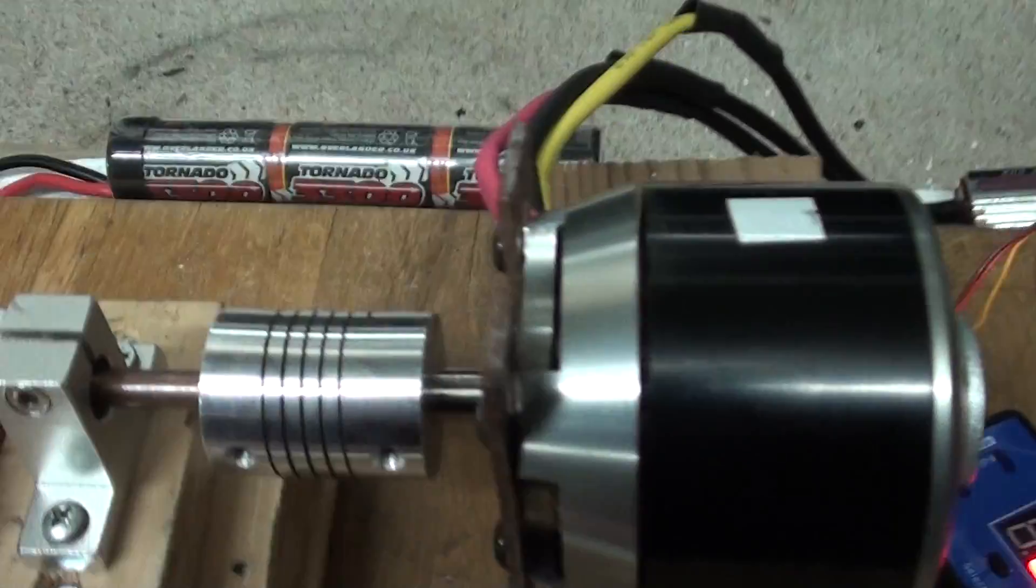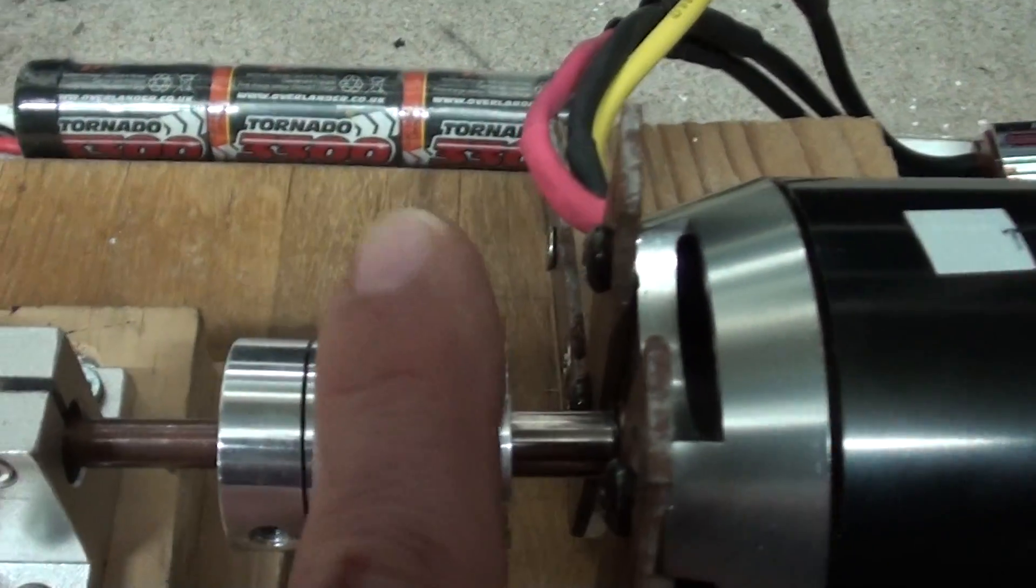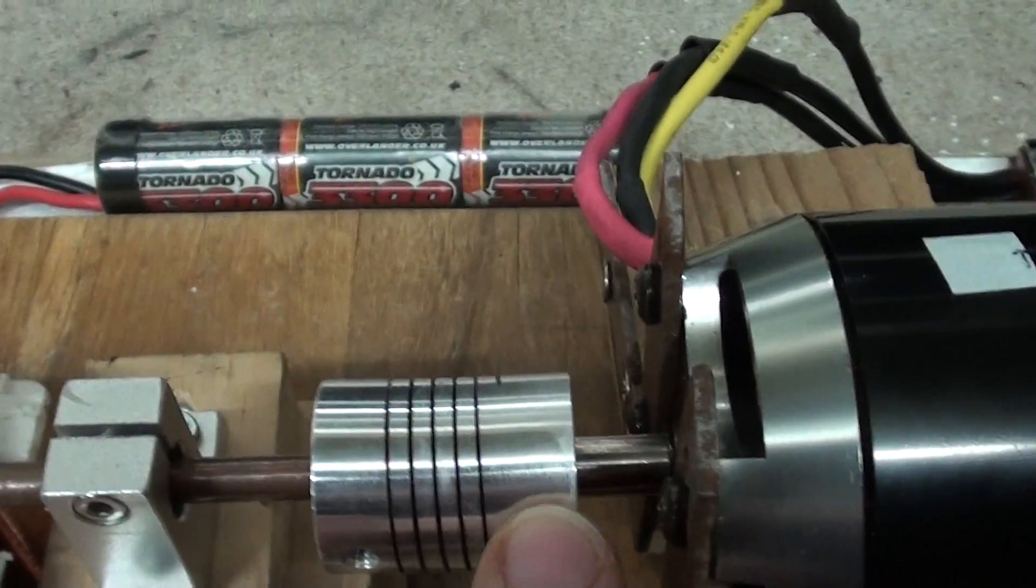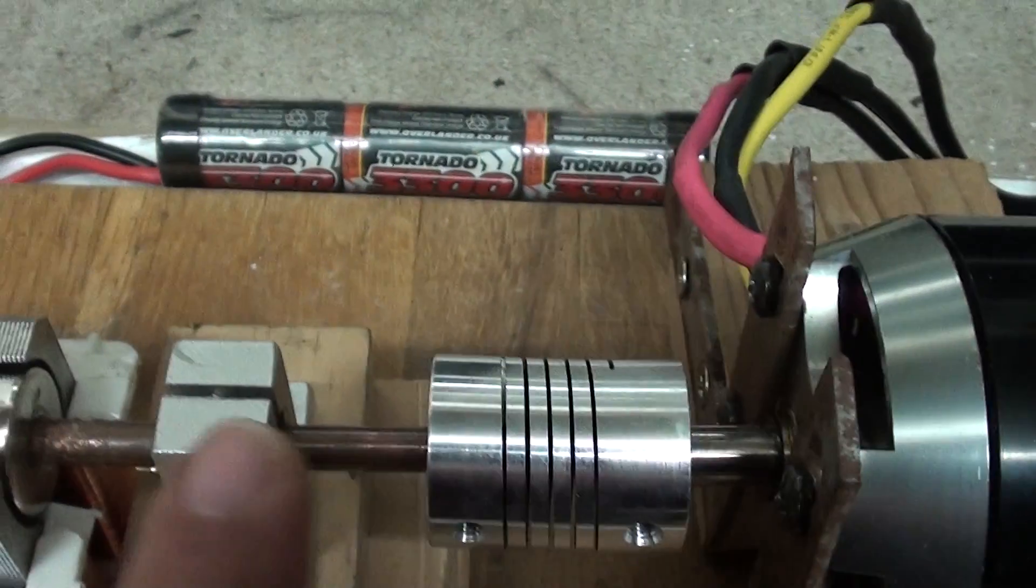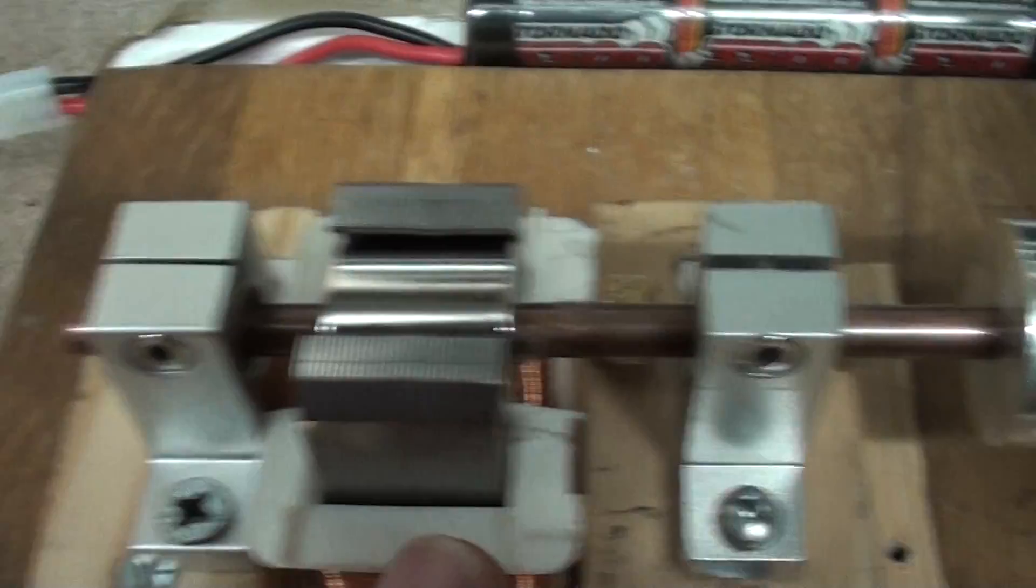To go through the setup, I've just got a little servo motor coupling to mount the motor onto the generator side. As you can see, it's a copper shaft.